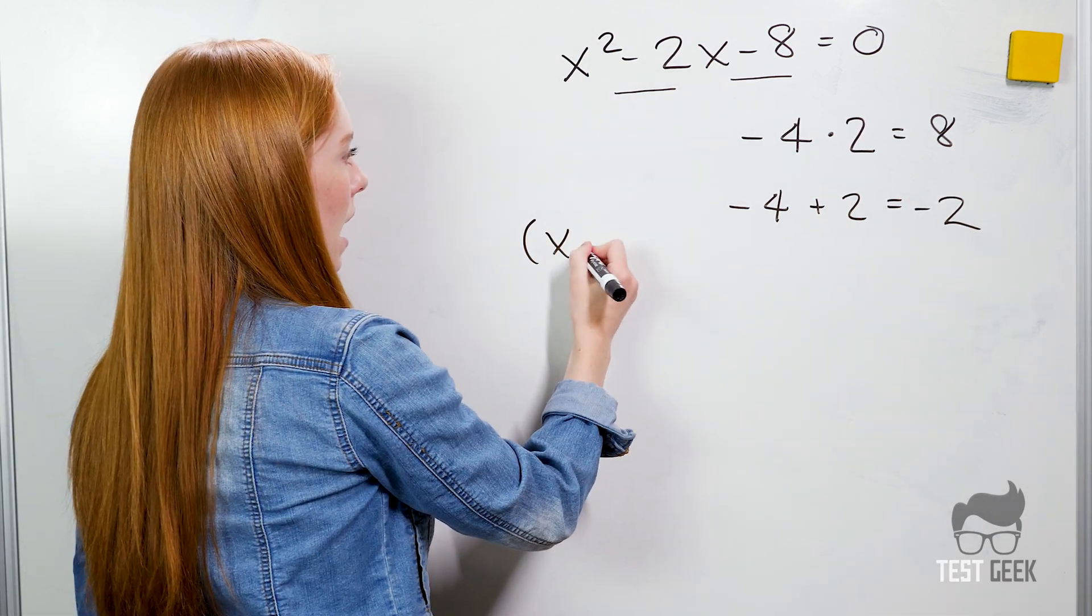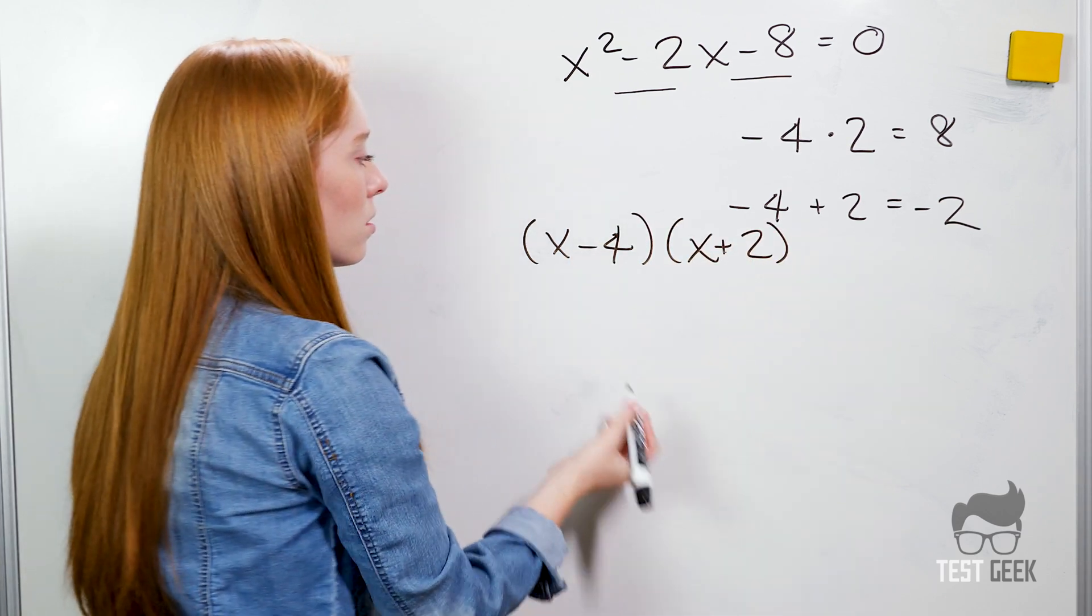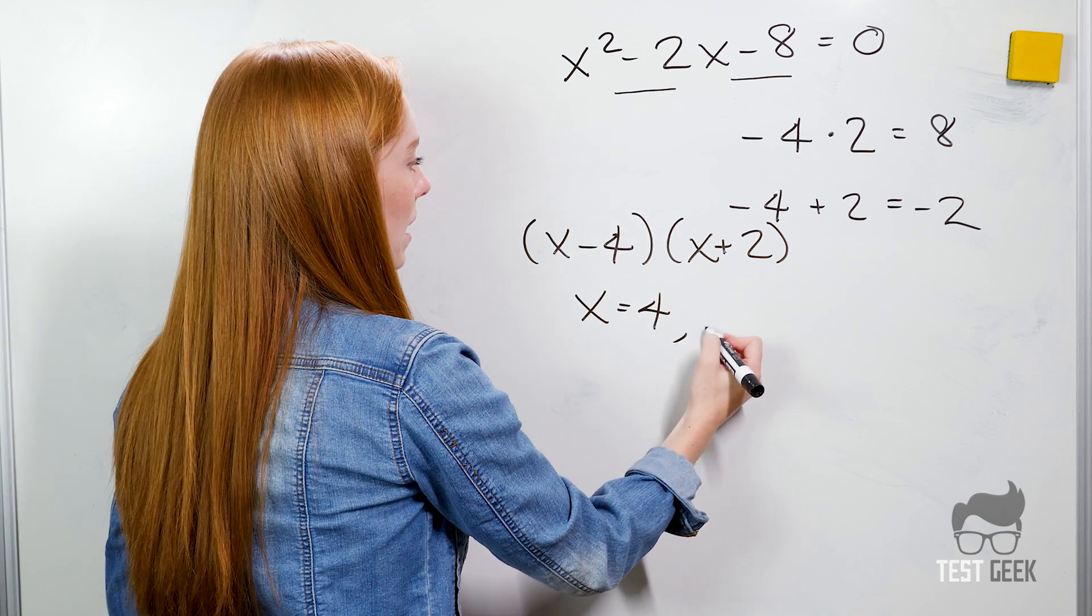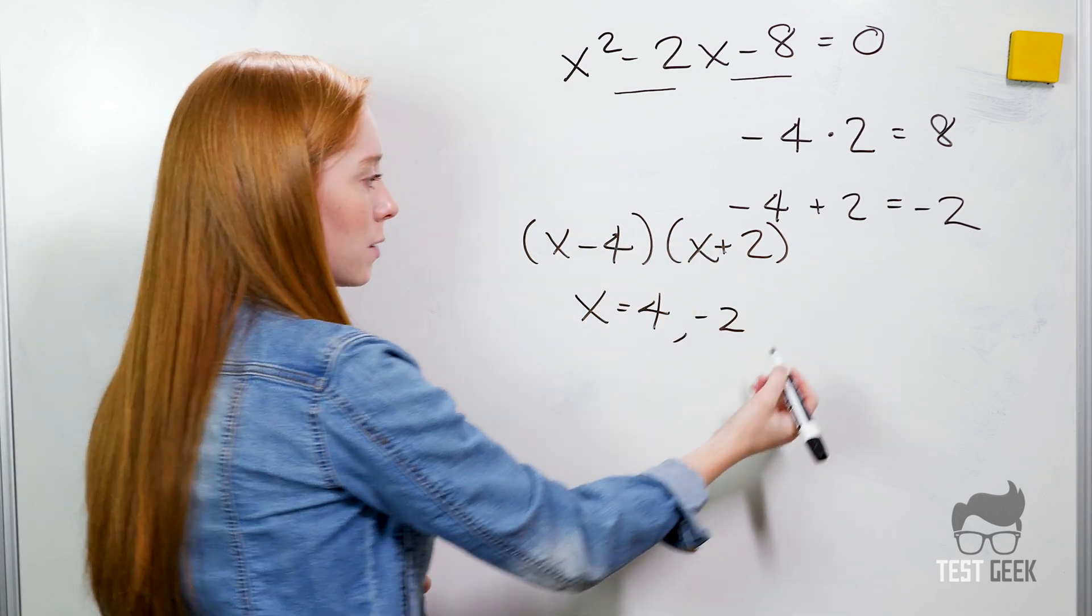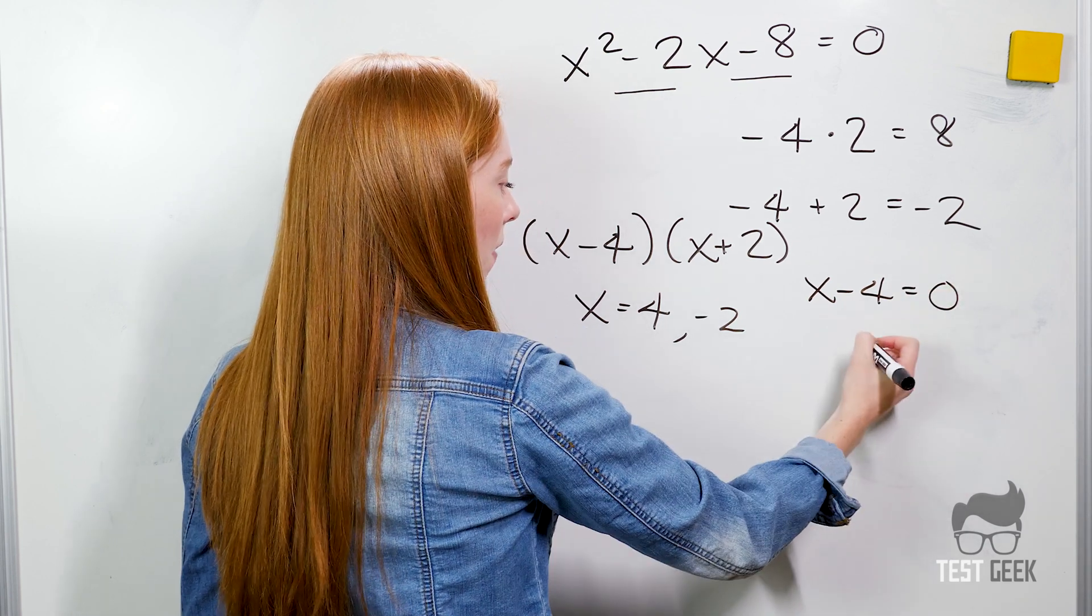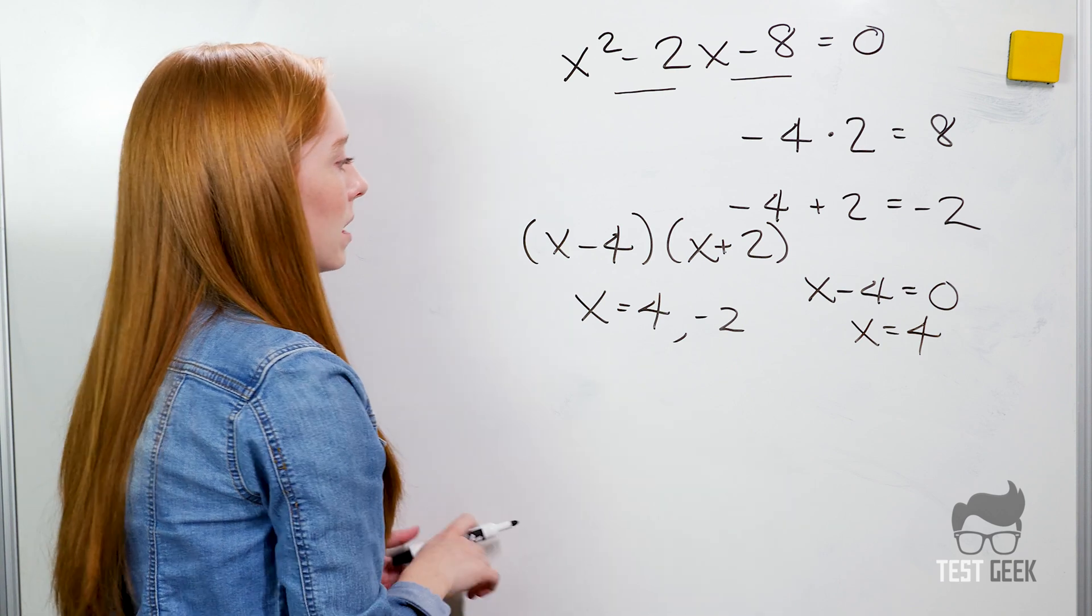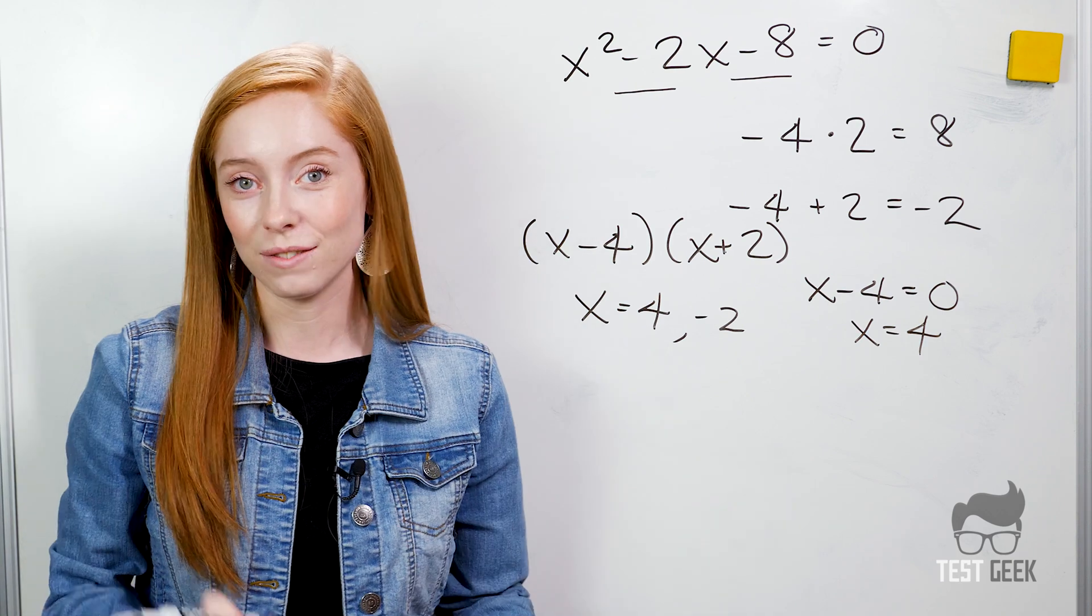So we can write our factors as x minus 4 times x plus 2. And our solutions would be x equals 4 and x equals negative 2. Remember because we can say x minus 4 equals 0. When we add that over we get x equals 4. So we have to flip our sign and we get x equals 4 and negative 2.